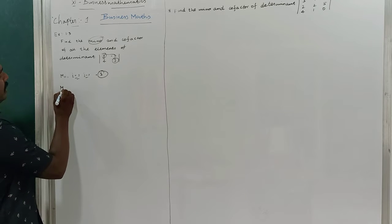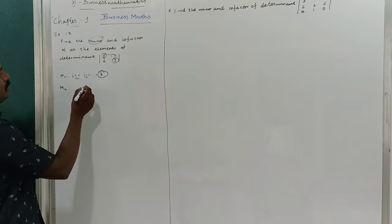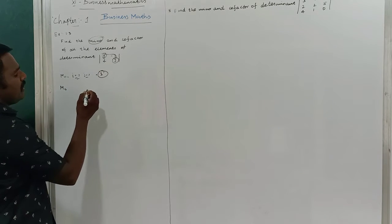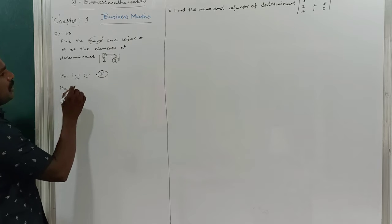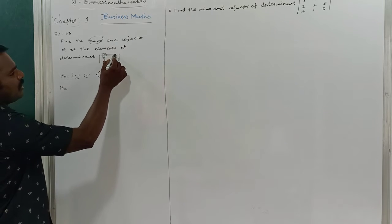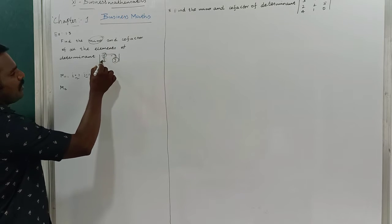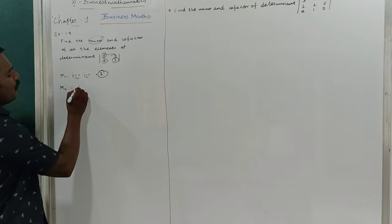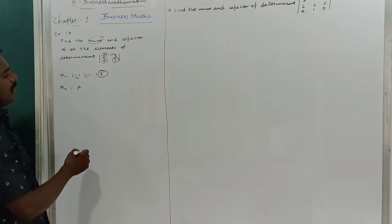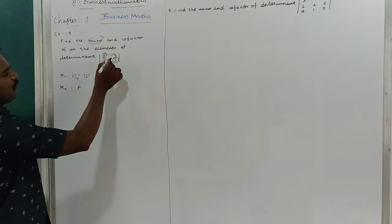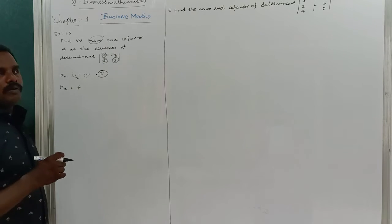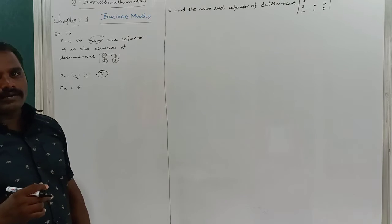What is the minor of M12? M12 means first row, second column. I remove those two terms and I get only 4. So 4 is the minor of M12.